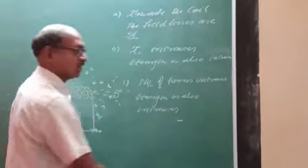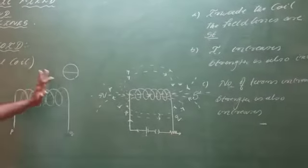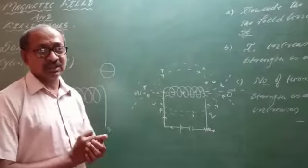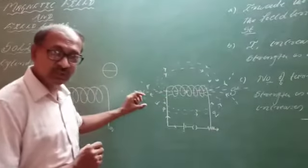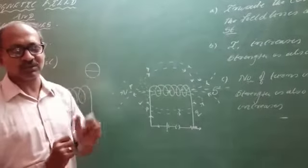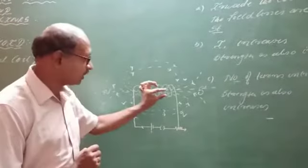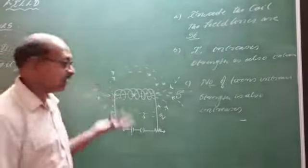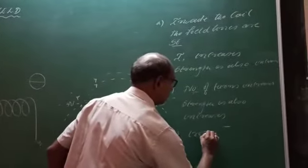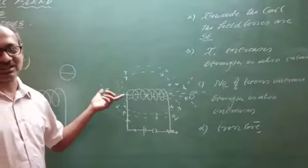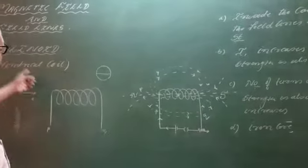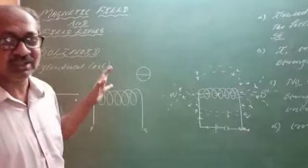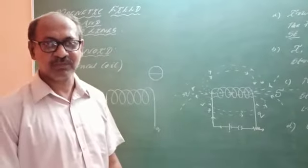So this is what happens in the solenoid. There is another important thing: if you introduce an iron core — a soft iron core — inside the solenoid, then the field strength is also increased. So this is all about the solenoid. I think you have understood the meaning of solenoid. The solenoid is a very very important concept, please study this. Thank you very much for watching.